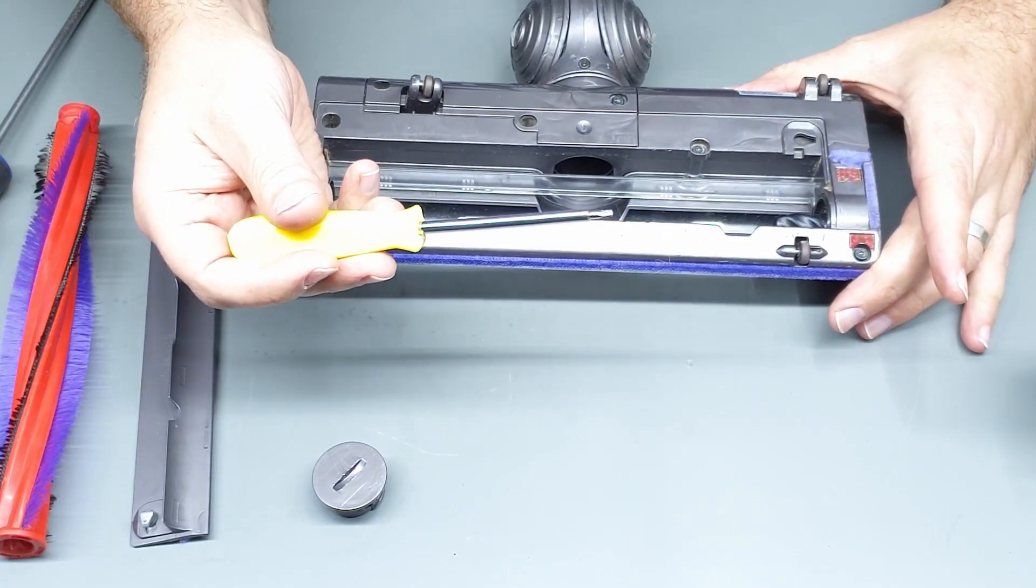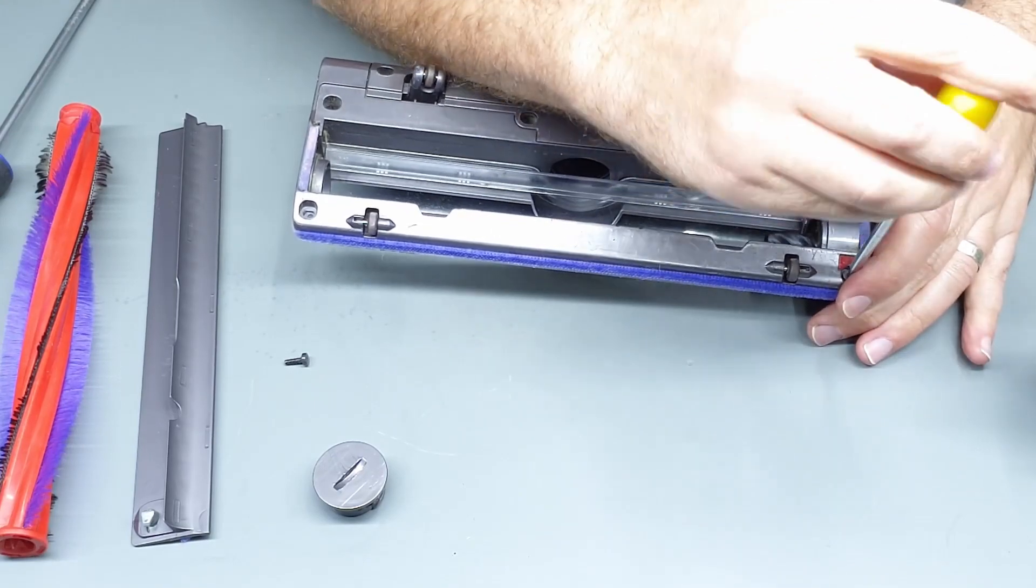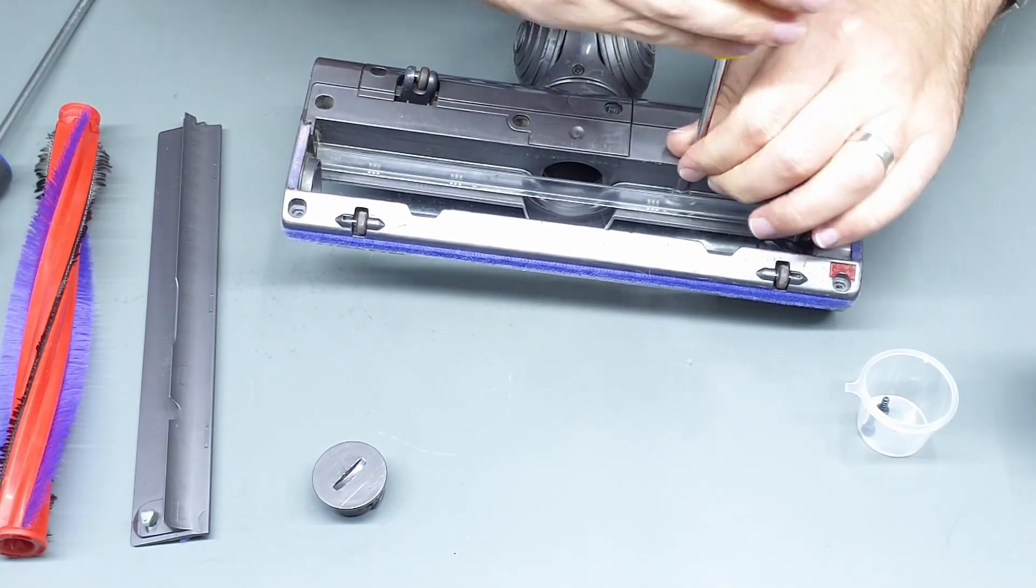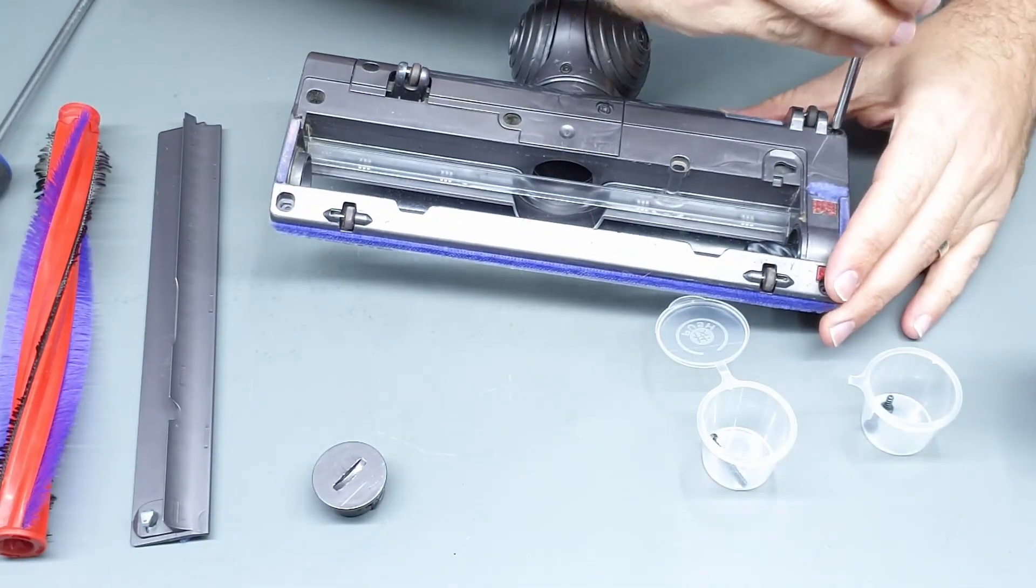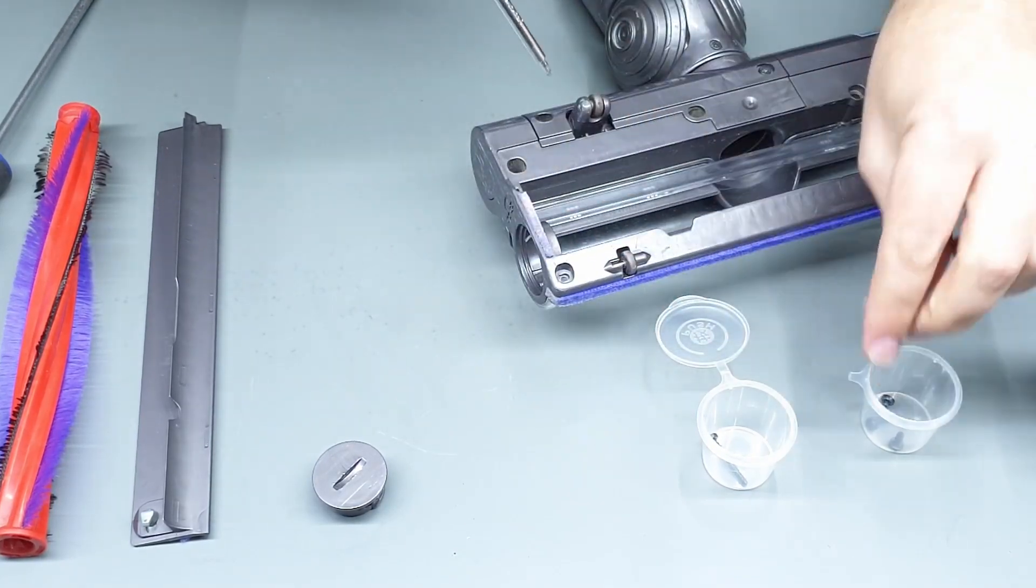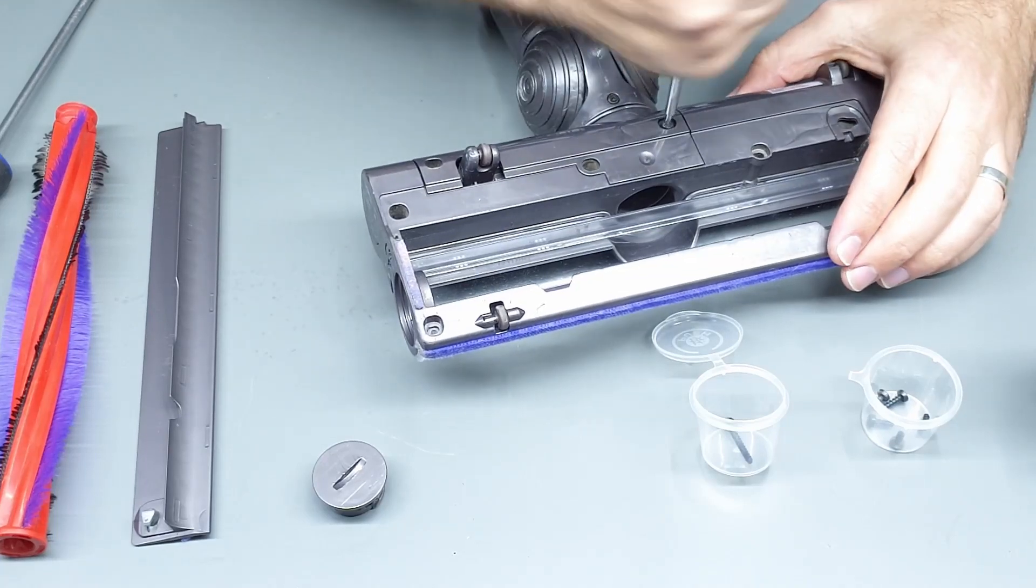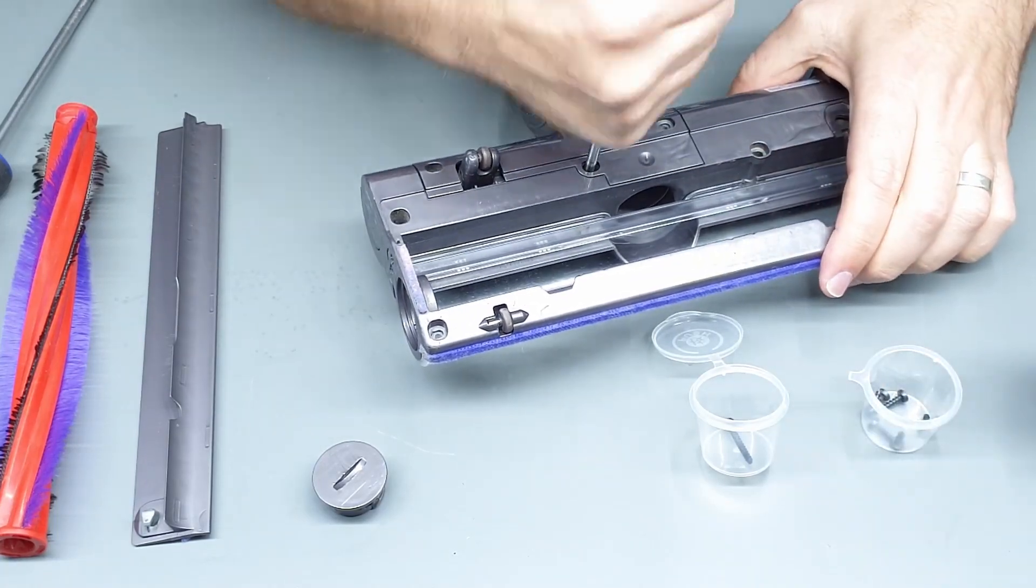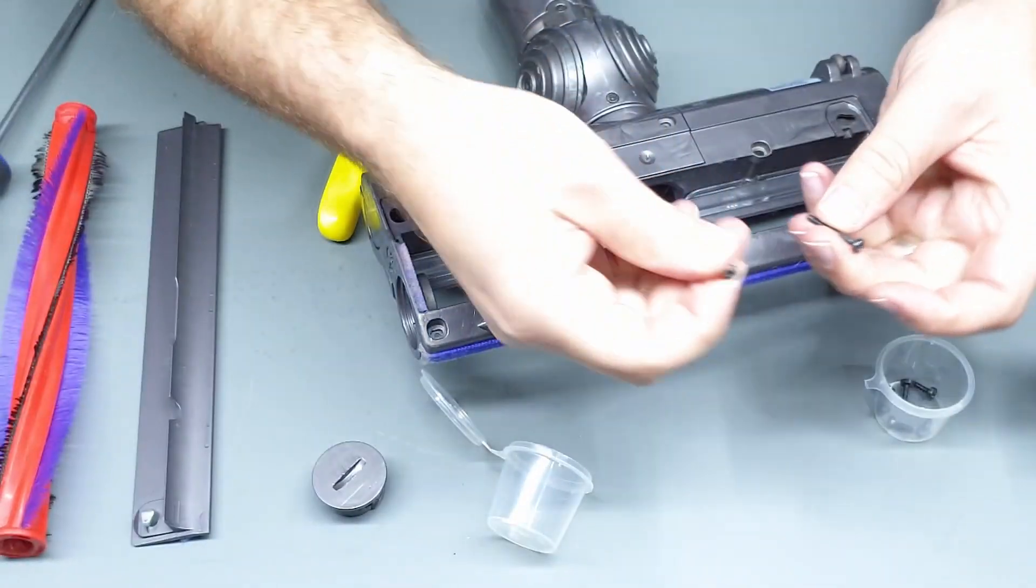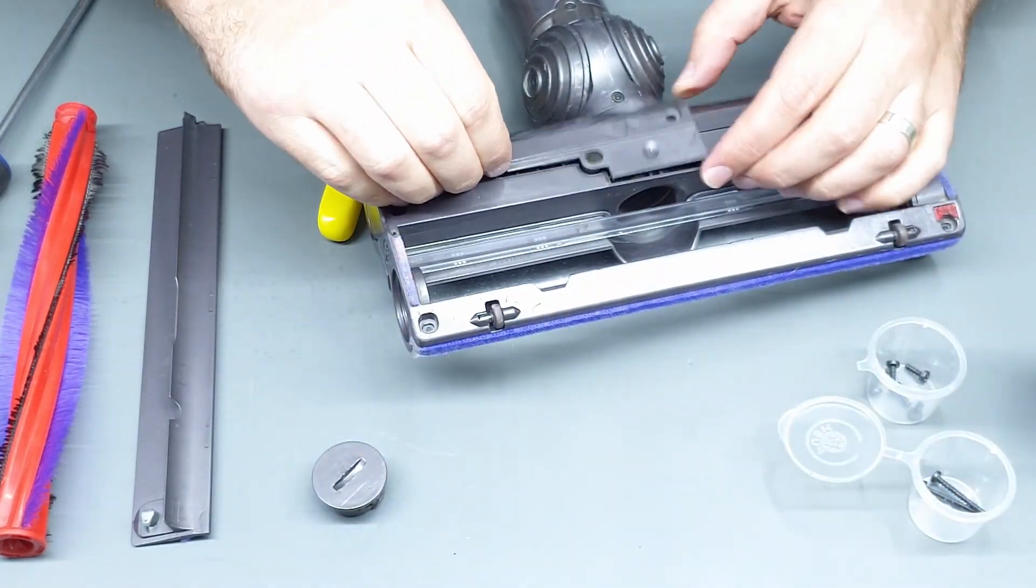So you'll need a Torx T8 driver and there's about five or six Torx screws that need to come out. So the two longer screws come from here and here.